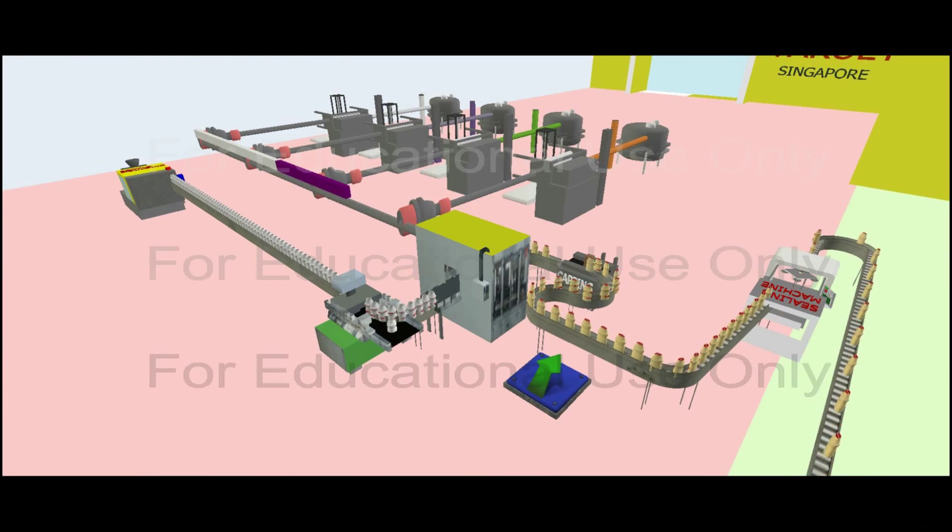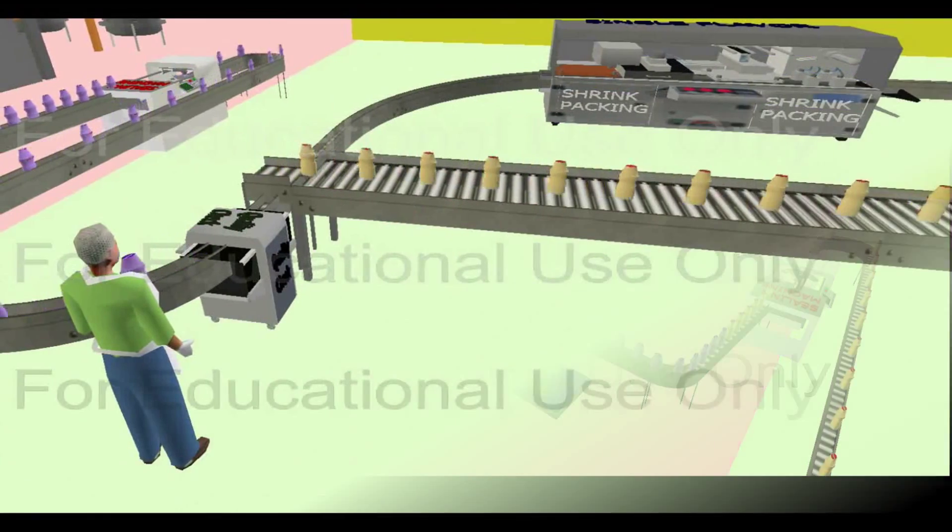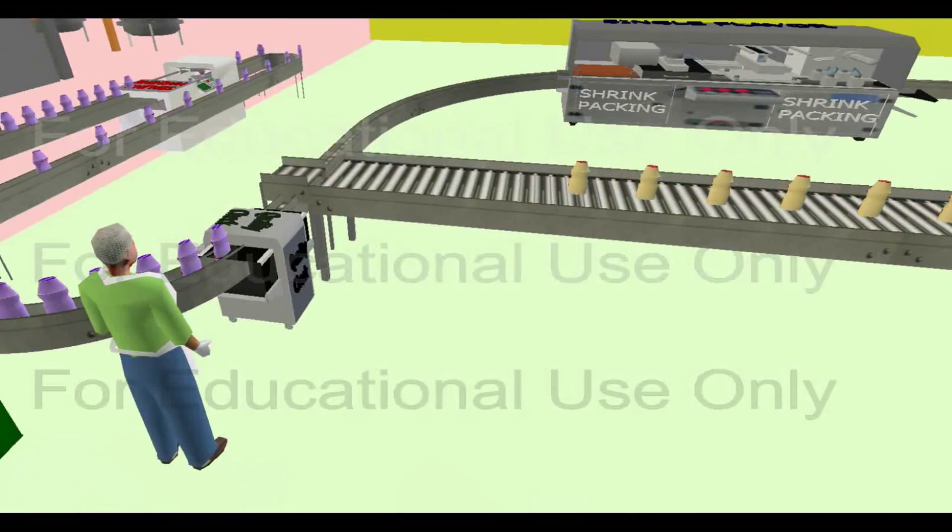After sufficient quantities of original flavored Youcold have been produced, production swaps to produce grape-flavored Youcold. The new flavor is pumped down the same fluid pipe, and the filling process begins. The grape-flavored Youcold undergoes the same process as the original.